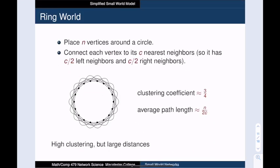So let's begin for real. We start by characterizing the ring world. We place n vertices in a circle, and then we connect each vertex to its c nearest neighbors. Note that it has c over 2 left neighbors, and c over 2 right neighbors. It can be shown that each vertex has clustering coefficient of about 3 quarters, and that the average path length is n over 2 c, which is linear in the size of the network. You will prove both of these facts in the accompanying practice activity for this video. Once you have done this, you will have confirmed that we have high clustering and large diameter.